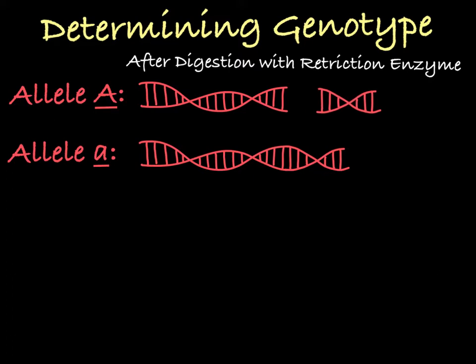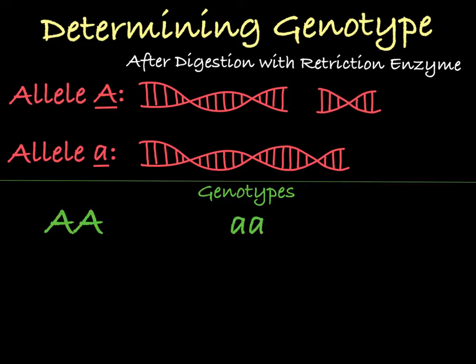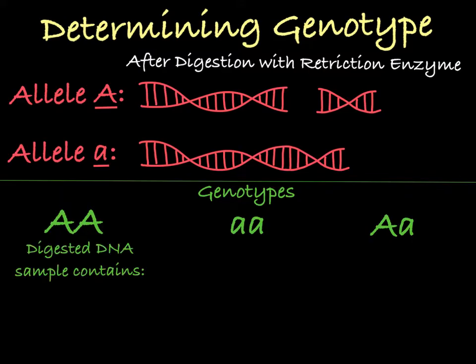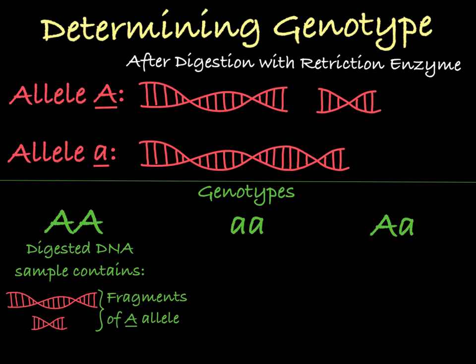Remember that a person will have two copies of this gene, and can be homozygous, containing two of the same allele, or heterozygous, containing two different alleles. Someone with the homozygous genotype big A, big A only has versions of this gene that will be cut by the restriction enzyme, with each allele producing a small fragment of DNA and a medium-sized fragment of DNA.